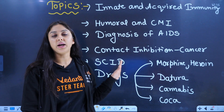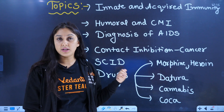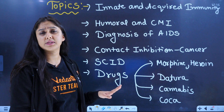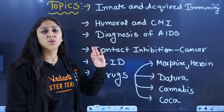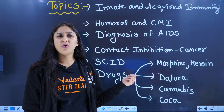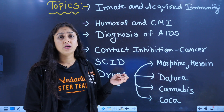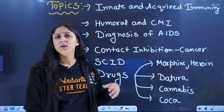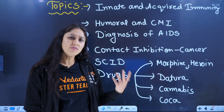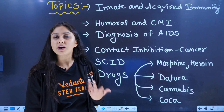SCID — Severe Combined Immuno-Deficiency Syndrome — is important to know. The next part is drugs, which is a very small topic but questions definitely come from it. You have to know about drugs like hallucinogens, sedatives, tranquilizers, vitamins, and barbiturates.